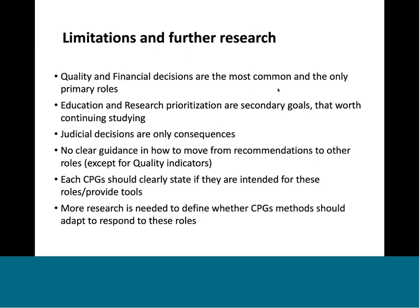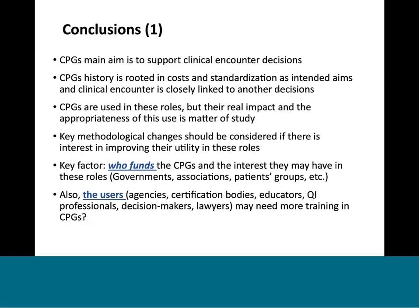More research is needed to define whether guidelines should or should not adapt to respond to these roles. As a conclusion: the main aim of guidelines is to support clinical encounter decisions. There is also a long history of guidelines, rooted initially in the U.S., where the expansion was driven by cost and standardization — two major roles that, at different degrees, were the intended aims of expanding or funding guidelines. Clinical encounter decisions are closely related to these other decisions, so we cannot see guidelines as only informing clinical decisions — they are completely interrelated with these fields.